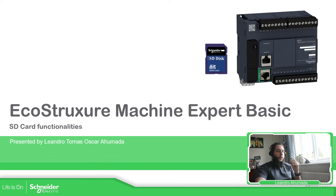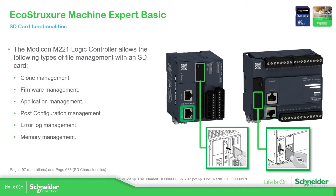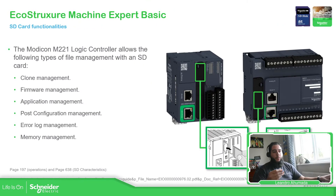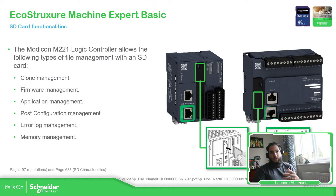With the SD card there are some functionalities we can do with our controller. We can clone the actual application on the controller and put it on the SD card. We also have the possibility to use the firmware update — we can download the firmware from the laptop to the SD card and then download it to the PLC. We can also download the application from the software to the SD card and then to the target. We also have the post configuration, which covers settings for communication ports such as Ethernet or Modbus serial — we can pre-define that, put it on the SD card, and then download it to the target.